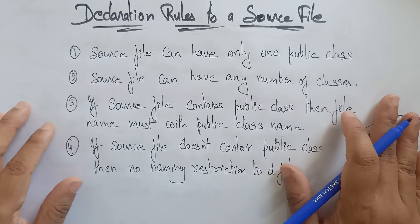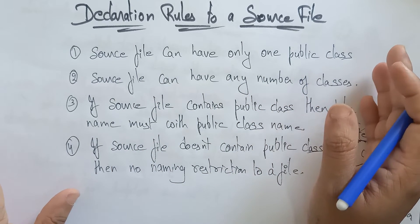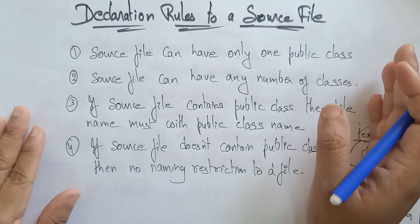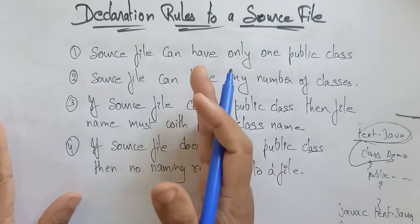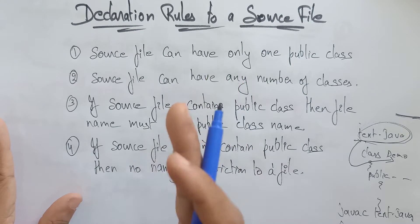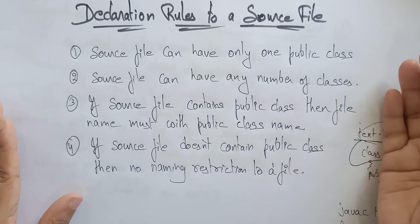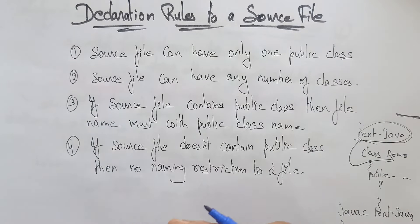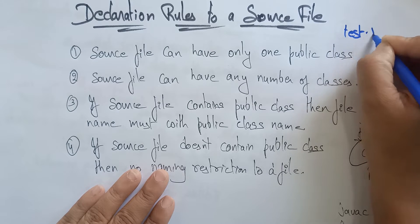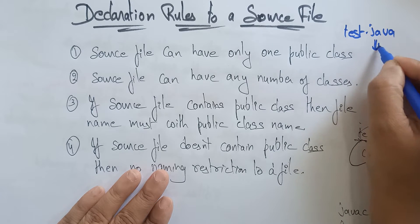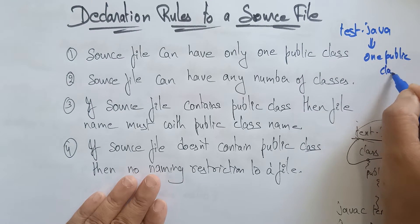The first rule: a source file can have only one public class. In that source file, only one public class should be there — meaning before the class, 'public' should be declared. A source file is nothing but the file you saved, for example test.java. In this source file, only one public class is allowed; you can't declare more than one.